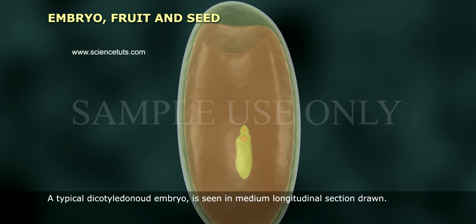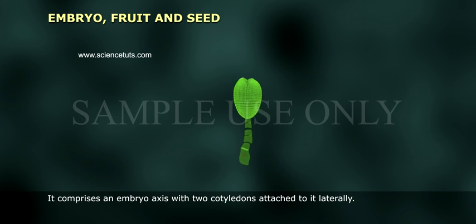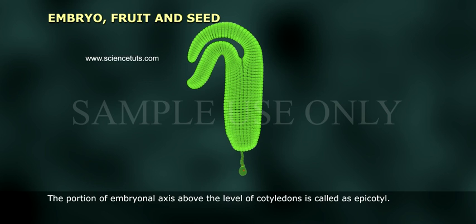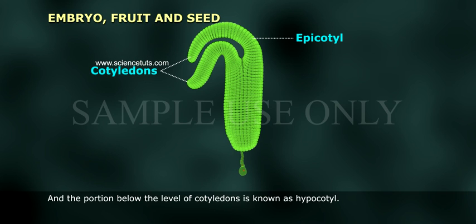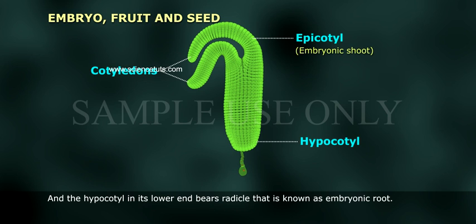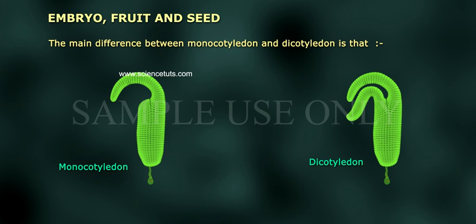A typical dicotyledonous embryo is seen in a median longitudinal section. It comprises an embryo axis with two cotyledons attached to it laterally. The portion of the embryonal axis above the level of cotyledons is called the epicotyl, and the portion below the level of cotyledons is known as the hypocotyl. The epicotyl terminates into the plumule, that is the embryonic shoot, and the hypocotyl at its lower end bears the radicle, that is the embryonic root.